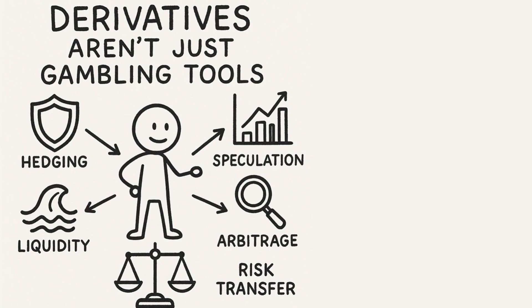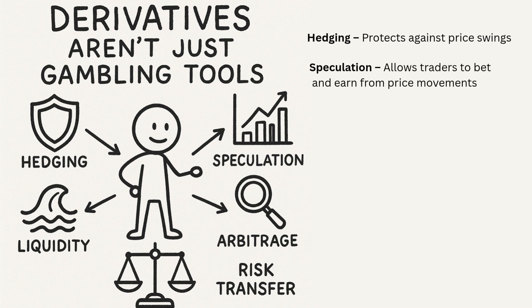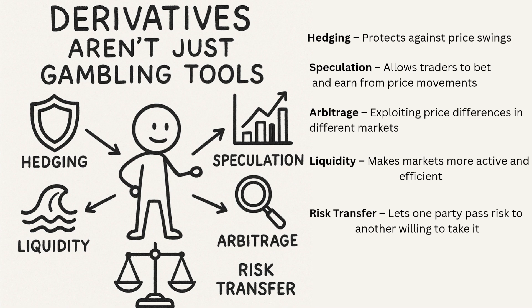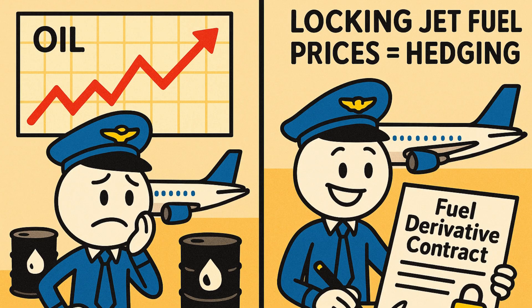Why are derivatives important? Derivatives aren't just gambling tools — they serve key roles in the financial world: hedging to protect against price swings; speculation, which allows traders to profit from price movements; arbitrage for exploiting price differences across markets; liquidity, making markets more active and efficient; and risk transfer, letting one party pass risk to another willing to take it. For example, an airline can lock in jet fuel prices using a derivative to avoid losses from rising oil prices — that's not speculation, that's smart business.